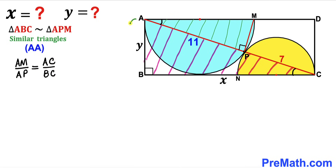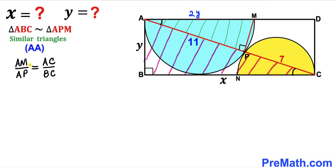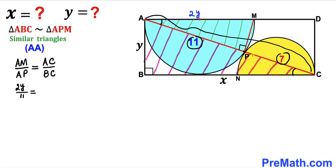AB is the radius of the blue semicircle and AM is its diameter, so AM equals 2y. Filling in the proportion: 2y divided by AP (which is 11) equals AC (which is 11 plus 7 = 18) divided by BC (which is x).